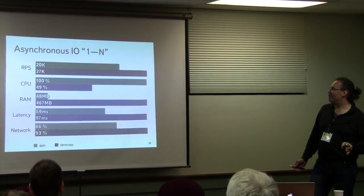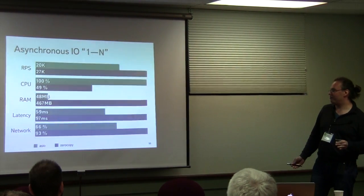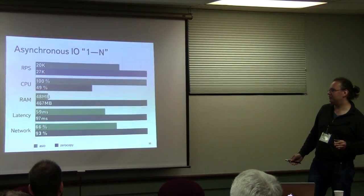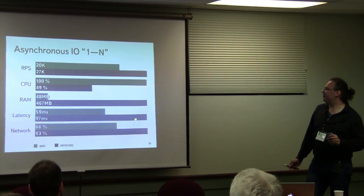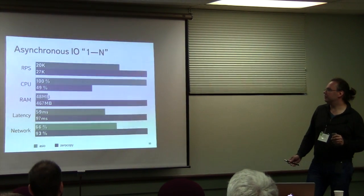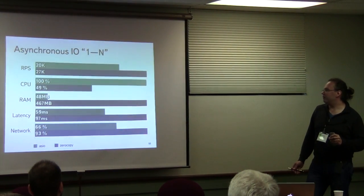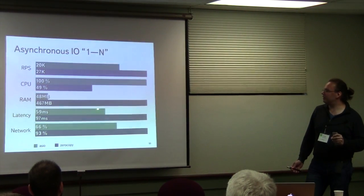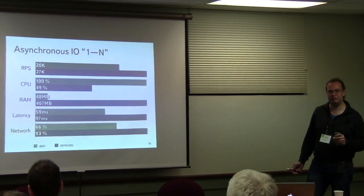This is the 1:N model with one IOS service object and number of threads equal to the number of CPU threads. We have an advantage from zero copy in requests per second and very good advantage in CPU consumption. We have no advantage in RAM consumption and no advantage in latency, but we think this is because we reached the network limit here.